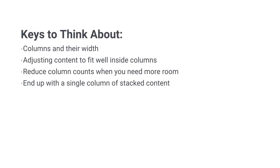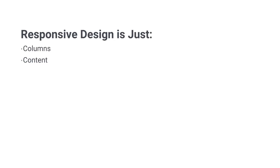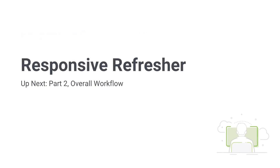To bring it back to simple key principles: all you need to think about when doing responsive design, whether in XD or any other platform, is your site's columns and the width of those columns, adjusting your content to fit inside those columns, and reducing column counts until you end up with one single column. Responsive design is all about columns and content. In part two of this responsive refresher, we'll talk about implementing those tasks — the overall workflow, how to handle breakpoints, and whether we still use the mobile-first methodology.